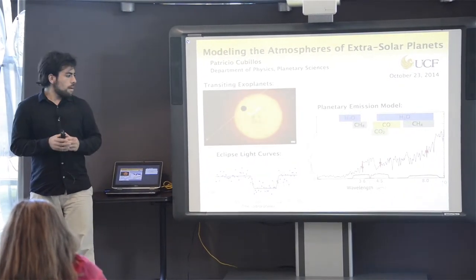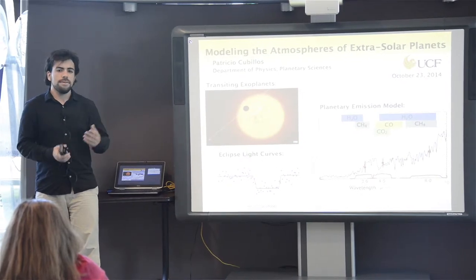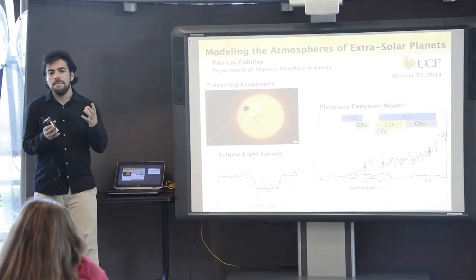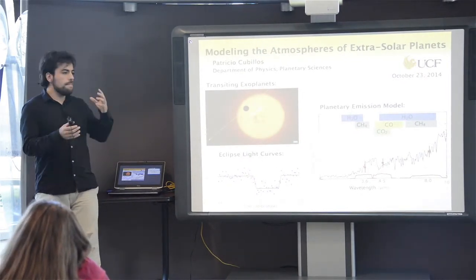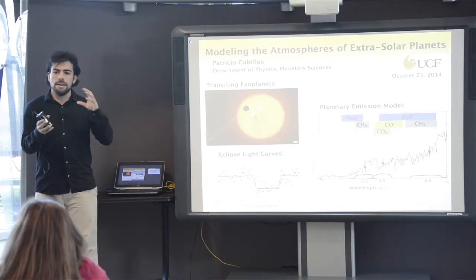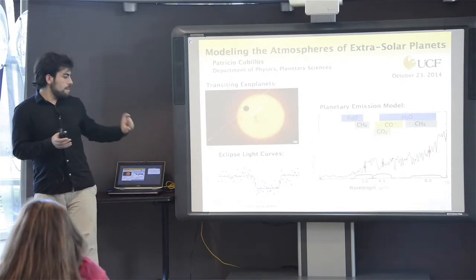When the planet passes behind the star, it's going to block the light from the planet. So that drop in the flux that we are measuring is a direct measurement of the emission from the planet.